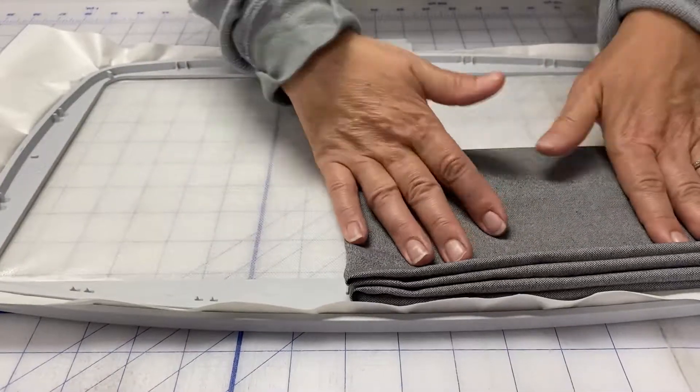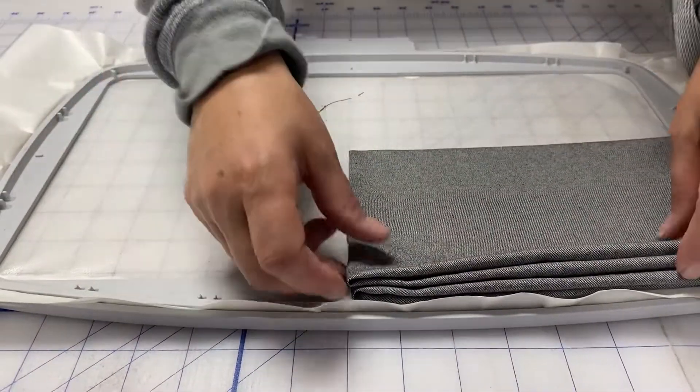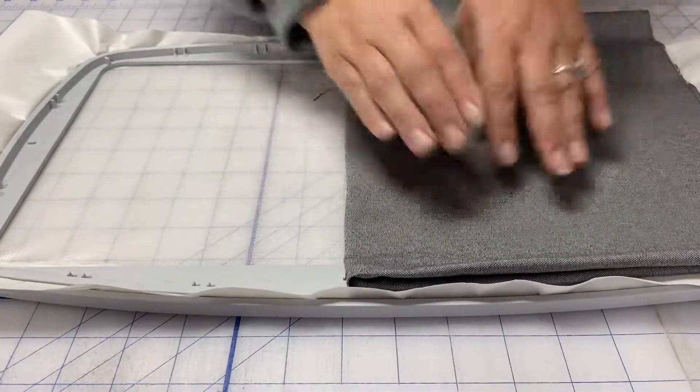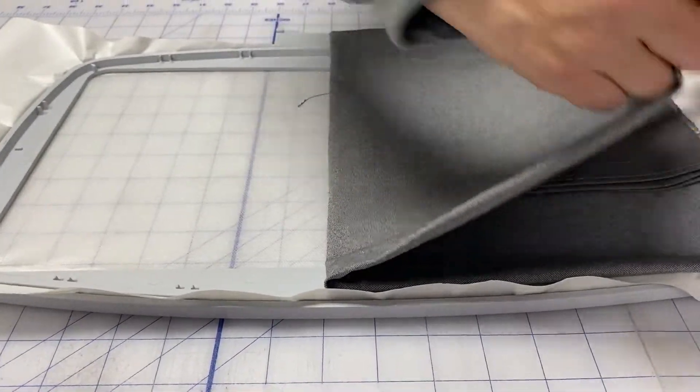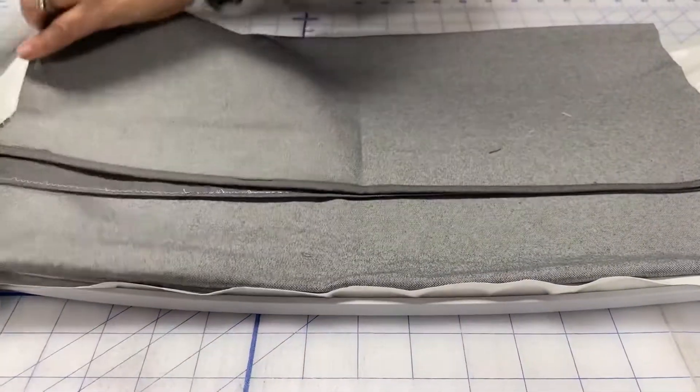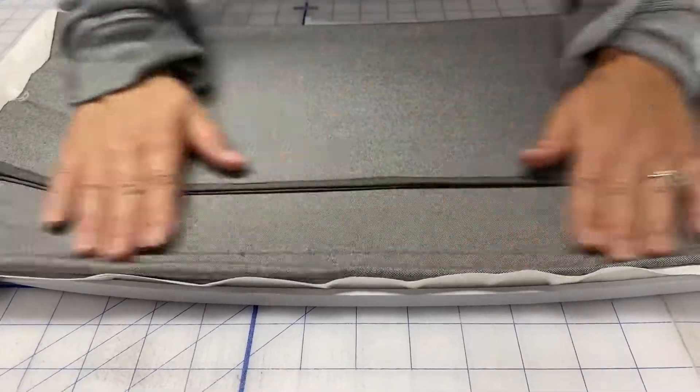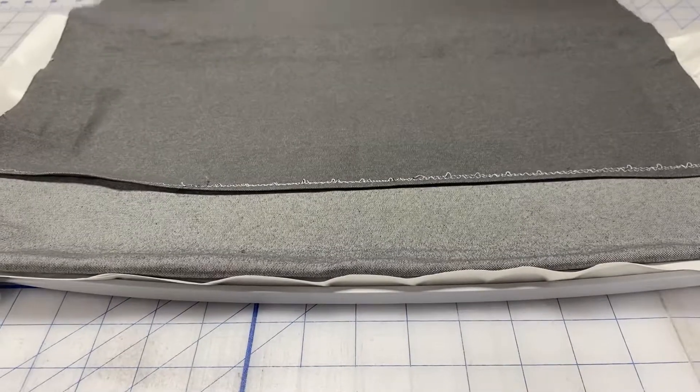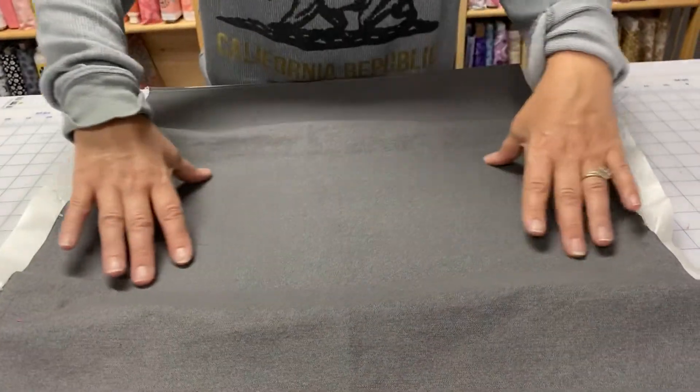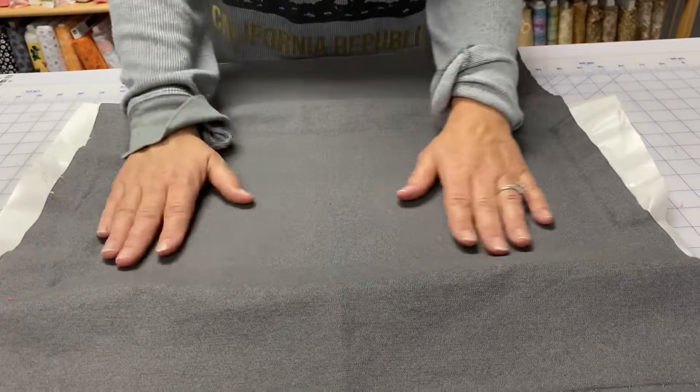Now all I have to do, because this is a sticky back stabilizer, is unfold my project. And I press it as I go. And I just keep unfolding. So now my project is perfectly centered. It is stabilized.